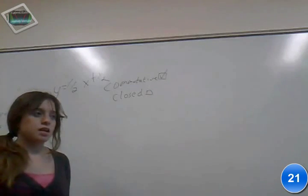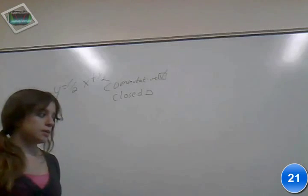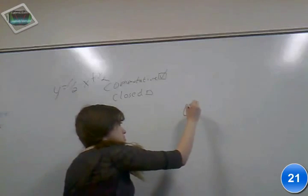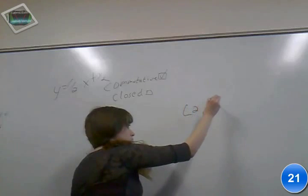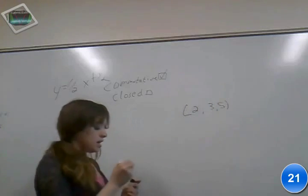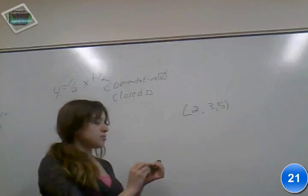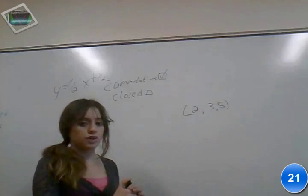And so if I was only working with the numbers 2, 3, and 5, if I plug these into my equation and I get back 2, 3, or 5, then it's closed. But if I plug these into my equation and get back like 7, then it's not closed because that's not defined in my set.